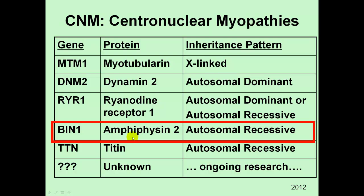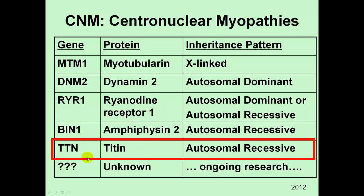The BIN1 gene codes for a protein called amphiphysin 2, and this has an autosomal recessive inheritance pattern, meaning the child would need to get two abnormal versions of the gene — one on each of the pair of chromosomes — having inherited an abnormal gene from both the mother and the father. Similarly, the TTN gene coding for a protein called Titin is also autosomal recessive, so again the child would need to have inherited an abnormal copy of the gene from both mom and dad.